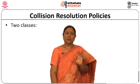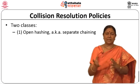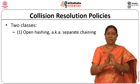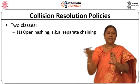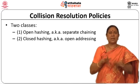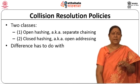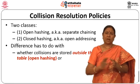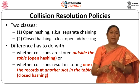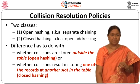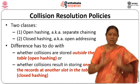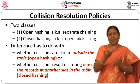Collision resolution policies are of two classes. One is open hashing or separate chaining — you agree that it hashes to the same location, you do not change the location, but at that location you have a chain where you store all the key values hashed there. The second is closed hashing, which is within the same hash table, while open hashing is outside the hash table. The difference is whether collisions are stored outside the table (open hashing) or whether the collision results in storing one of the records at another slot in the same table (closed hashing). Do not get confused — closed hashing has a method called open addressing, which we will come to later.